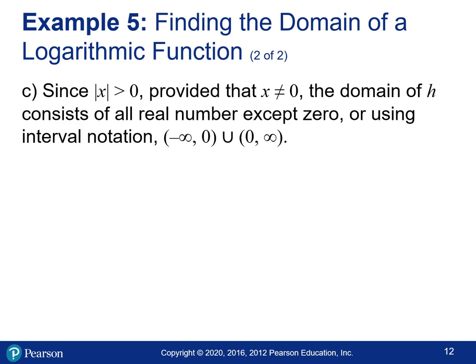For log of absolute value of x: the argument is |x|, which is always greater than or equal to zero. The only issue is that the argument must be strictly greater than zero, so x cannot equal zero. All other real numbers work, so the domain in interval notation is (negative infinity, 0) union (0, infinity).